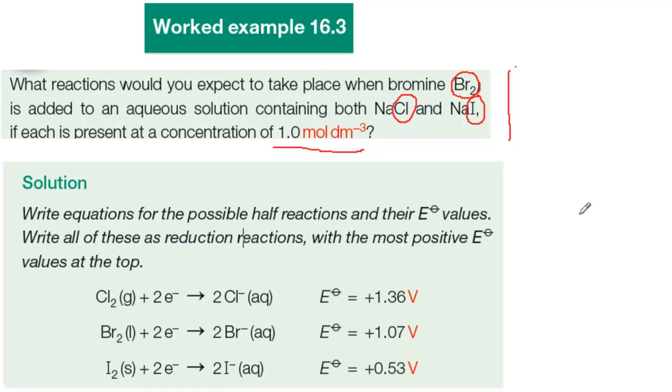The half cell reactions are normally written like this as reduction reactions with electrons on the left-hand side. When they're written in a list like this, with the most positive E standard at the top, the reactions are in order of oxidizing power, with the most powerful oxidizer at the top.